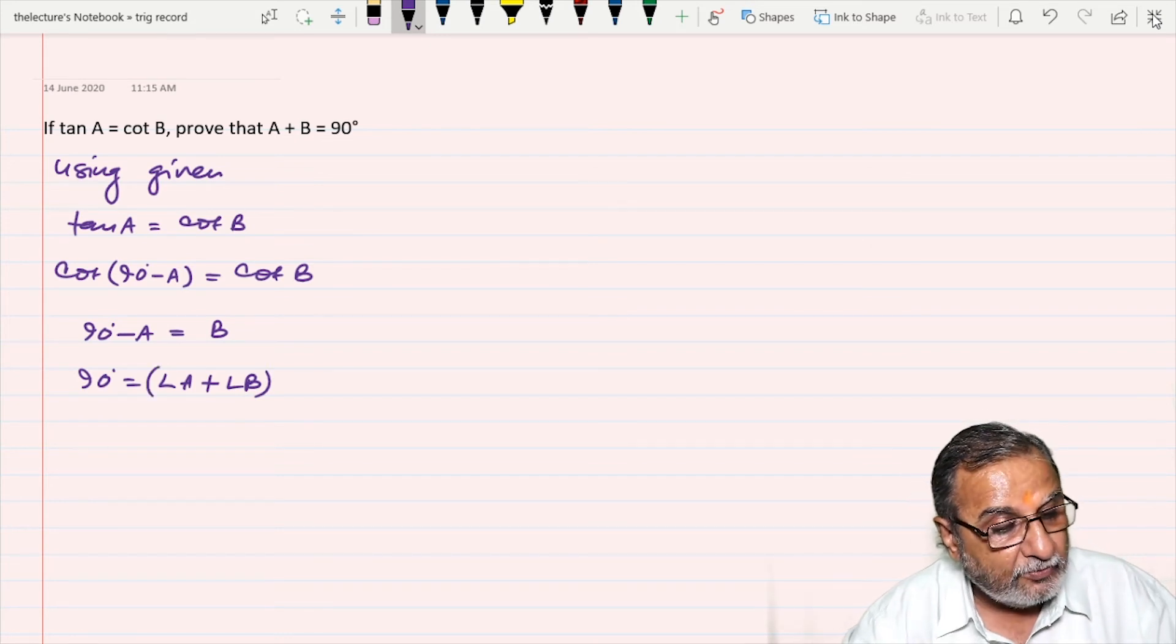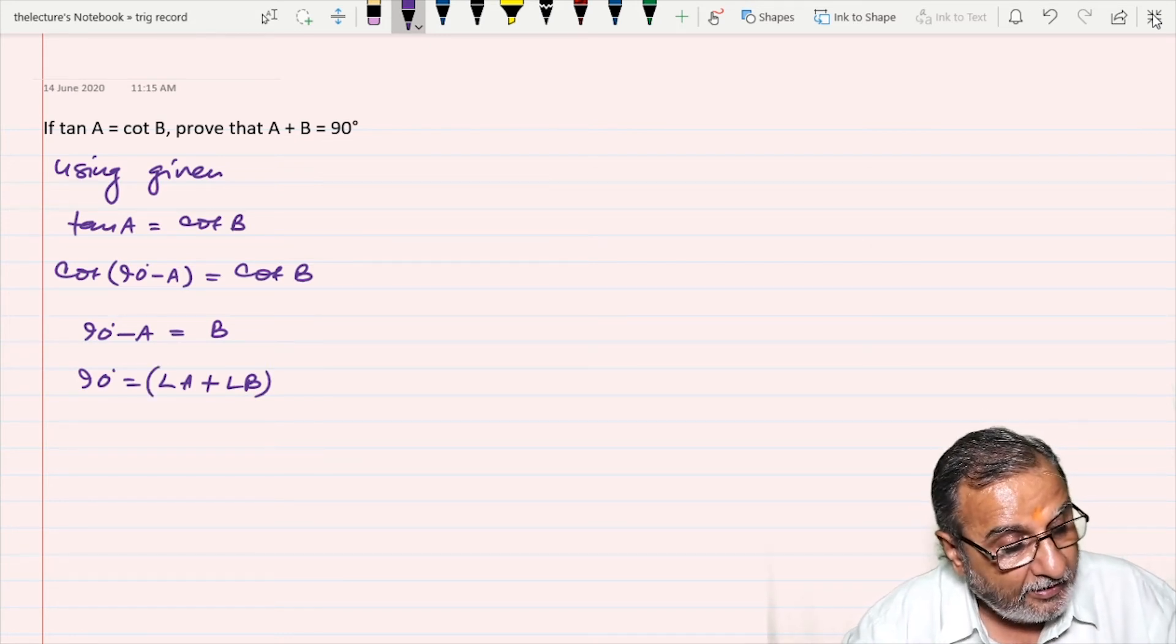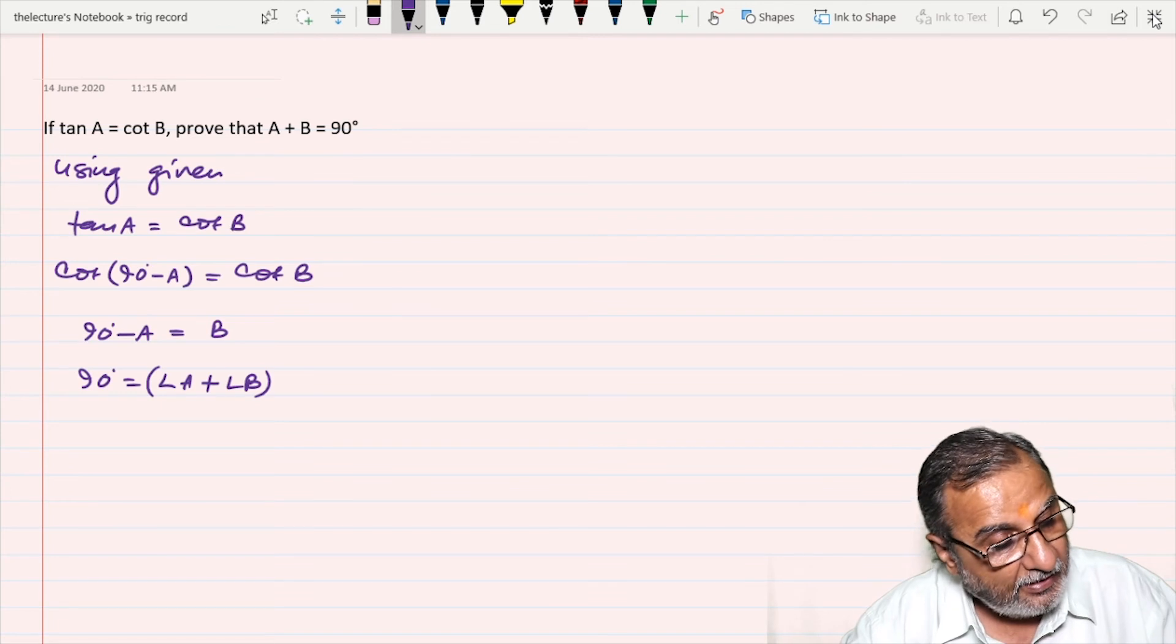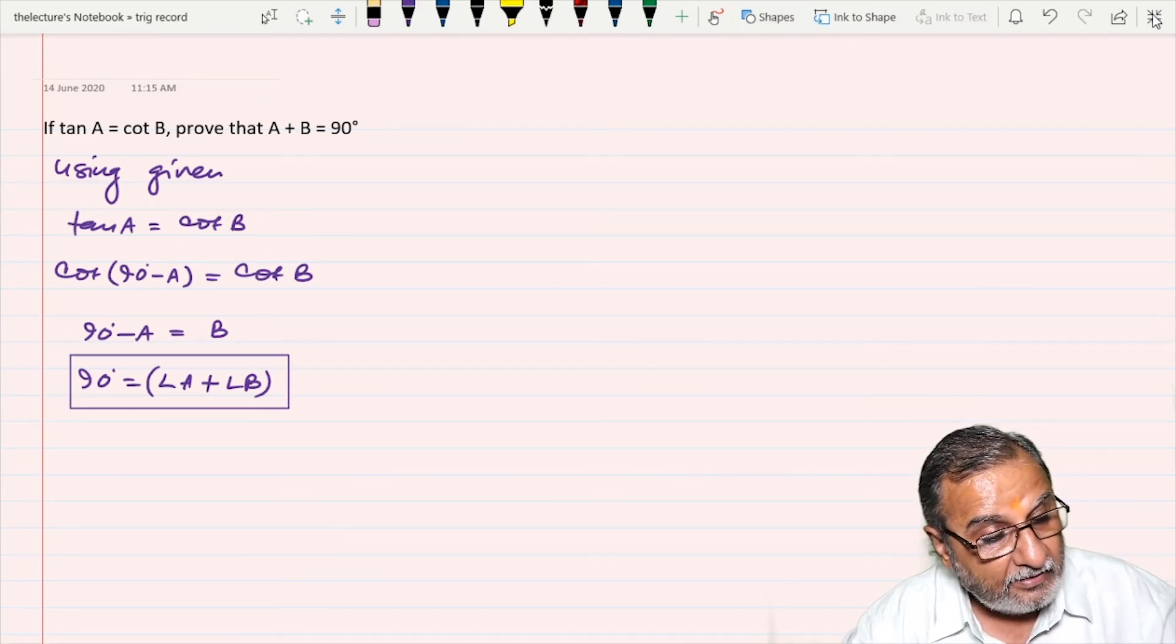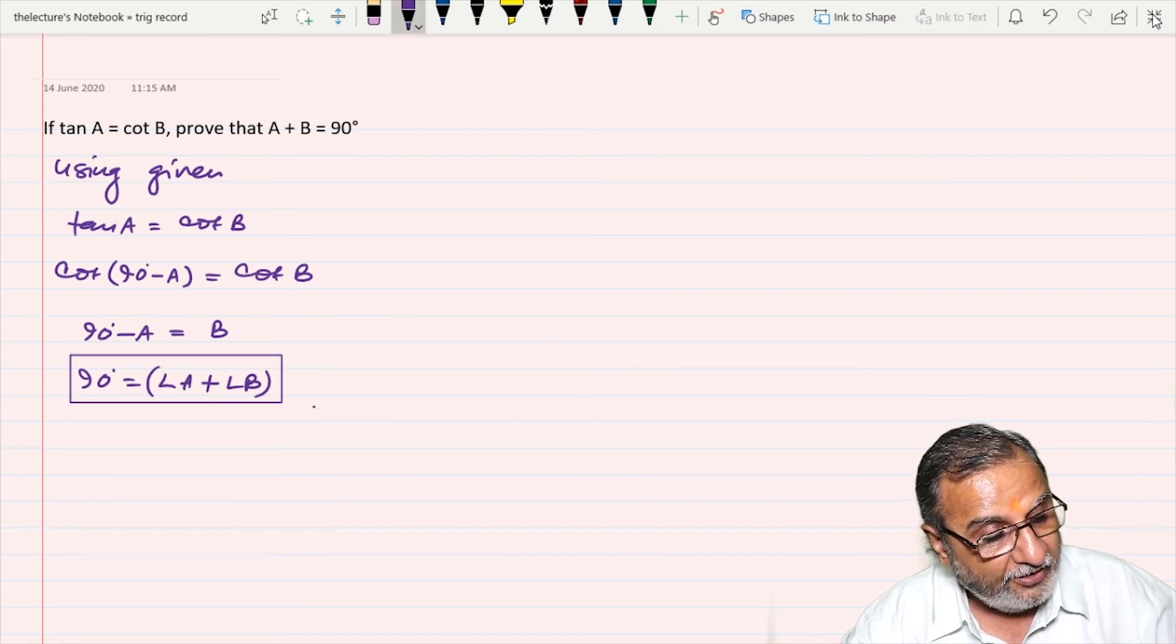Hence, the value of angle A plus angle B is 90 degrees. So it is our right hand side. We have proven it. Thank you.